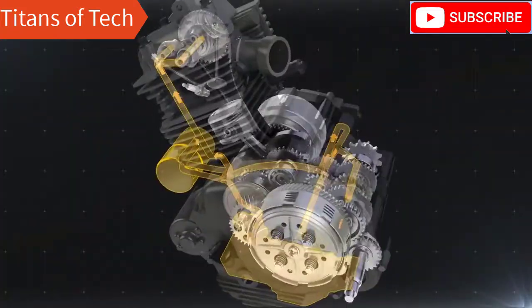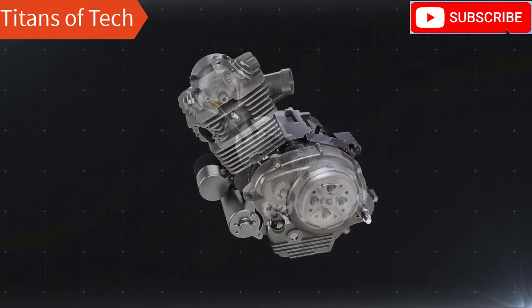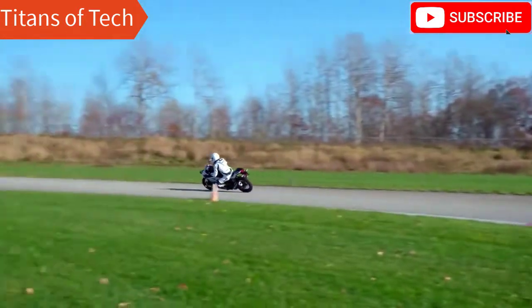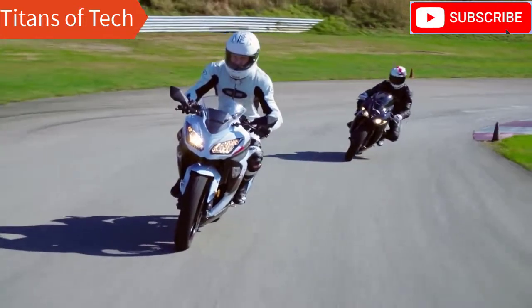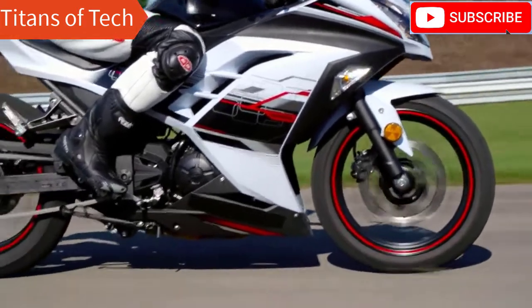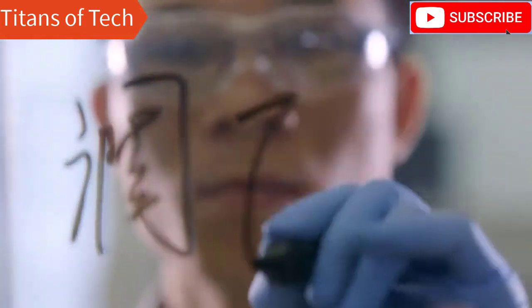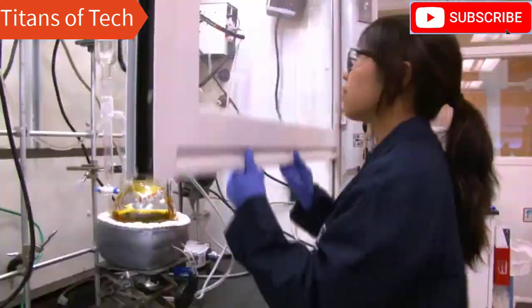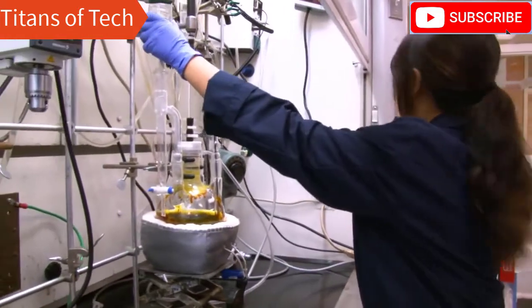With its engine, clutch and gearbox all sharing a single housing, the four-stroke motorcycle truly represents a groundbreaking feat in design, achieving two important goals of saving both weight and space. Of course, ongoing advancements in mechanical engineering like this create the need for continual breakthroughs in chemistry as well.